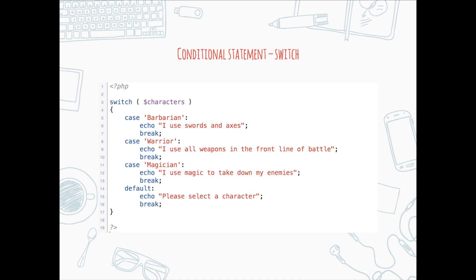The switch statement is another alternative conditional statement. Switch statements allow you to select between different options for a value and run different pieces of code depending on what the case is. It's good to use switch statements when the variable can vary a lot, but it's not really a popular thing to use — I always prefer to use if, else if, then else. The default value at the very bottom runs if none of the statements match, just like the else statement with if-else.